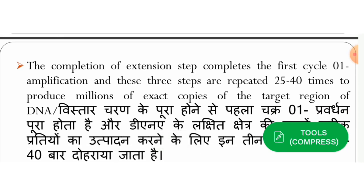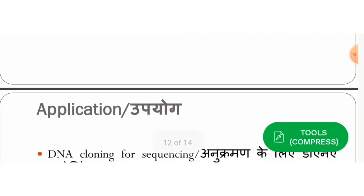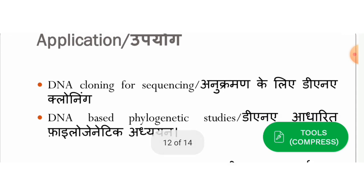These three steps are repeated for 30–40 cycles. After completion, the amplification follows 2^n times replication, meaning if the cycle number is 30–40, then 2^30 times amplification is achieved at the end of the cycles — resulting in 2^n copies of the target DNA.